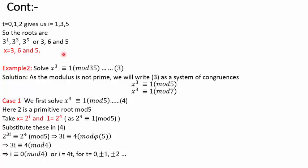Let's come to the second example where the modulus is not prime — here the modulus is 35. What we do is reduce this congruence as a system of congruences: x³ ≡ 1 (mod 5) and x³ ≡ 1 (mod 7). So 35 has been split into two factors, 5 and 7. We will start with the first congruence x³ ≡ 1 (mod 5). Again, you will check for a primitive root of mod 5 — you will see that 2 is a primitive root of mod 5.